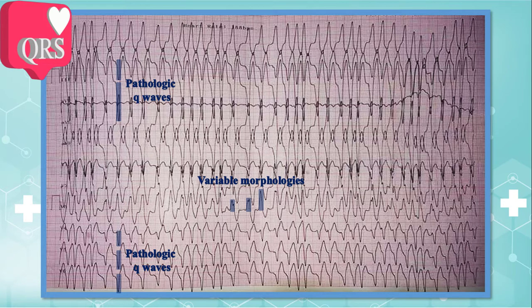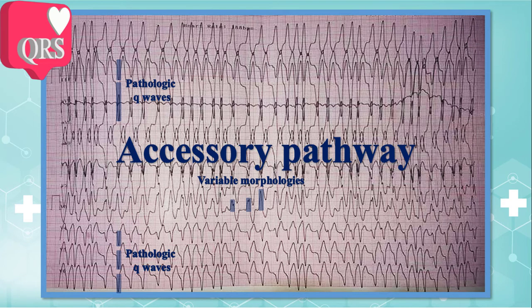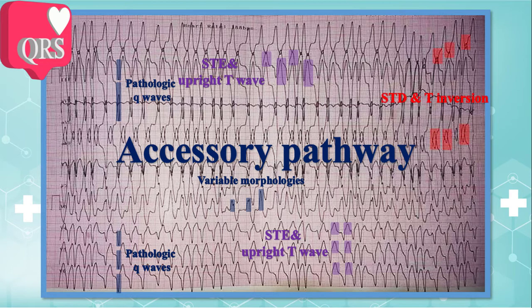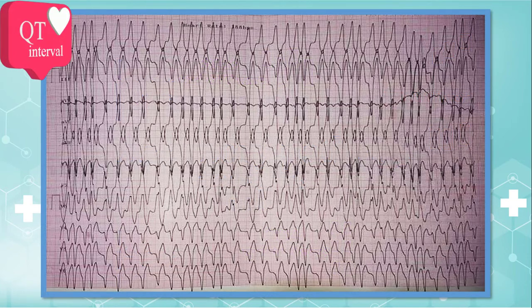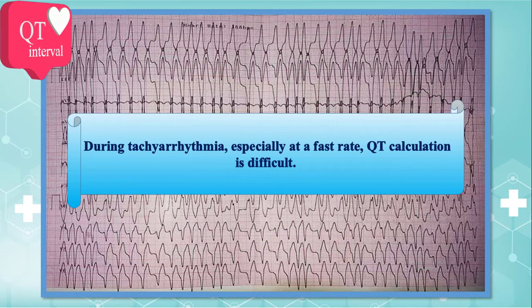All these QRS complex changes are expected in an accessory pathway. Additionally, discordant STT changes — like ST elevations in inferior leads and V4 to V6, or ST depressions with concomitant T wave inversion in lateral leads — are secondary to the WPW pattern as well. Regarding QT interval, during tachyarrhythmia, especially at fast rates, QT calculation is difficult, so it is better to postpone QT calculation after controlling the arrhythmia.